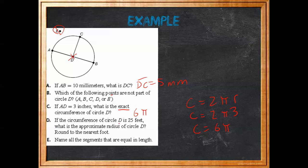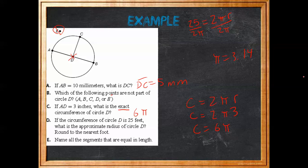If the circumference of circle D is 25 feet, what is the approximate radius? 'Approximate' means use pi equals 3.14 and give a number. So circumference equals 25, and we use C equals 2πr. We divide both sides by 2π: 2 times 3.14 gives us 6.28, then 25 divided by 6.28 gives us 3.98. Rounding to the nearest foot, the radius is approximately 4 feet.